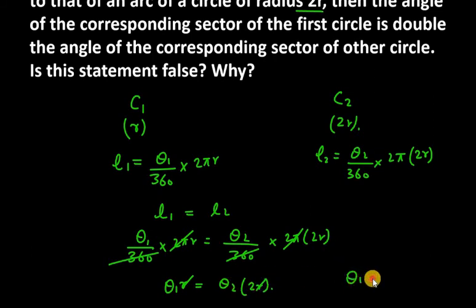So what is left? Theta 1 is equal to 2 theta 2. That means angle of sector of the first circle is twice the angle of sector of the other circle.